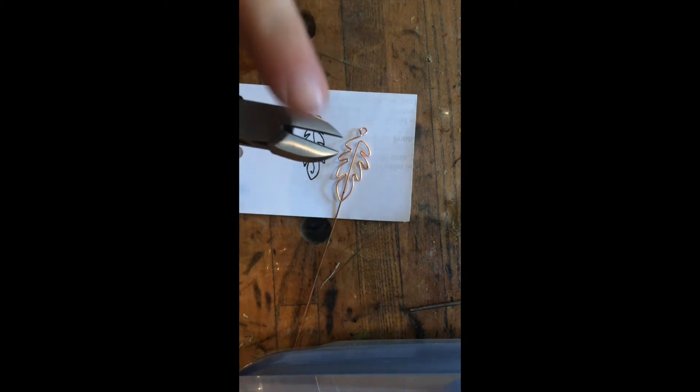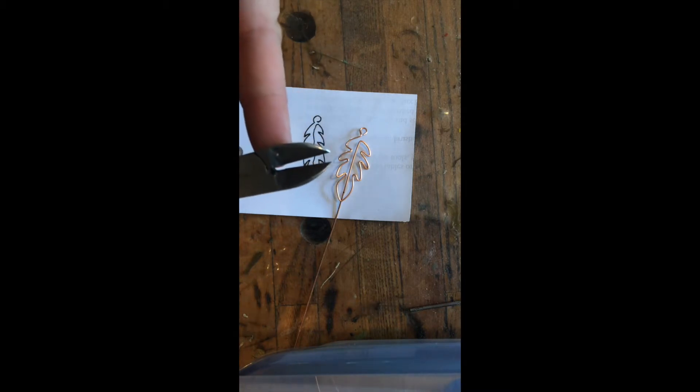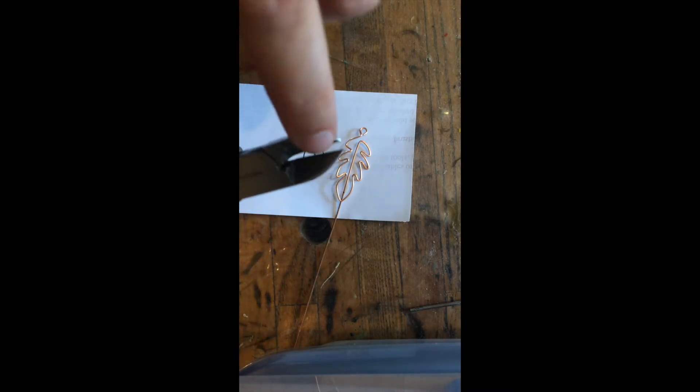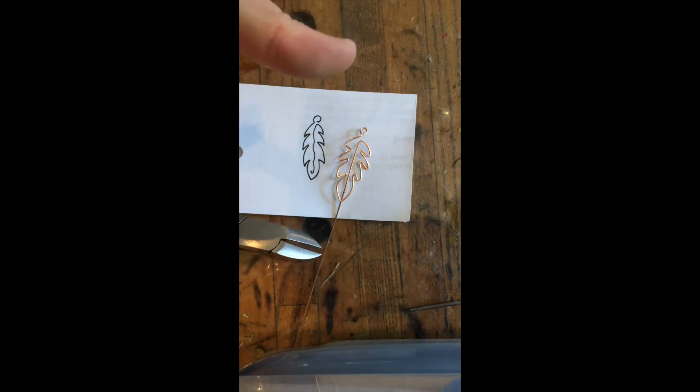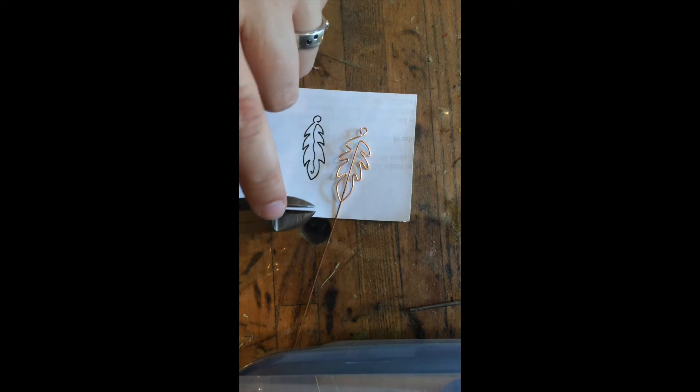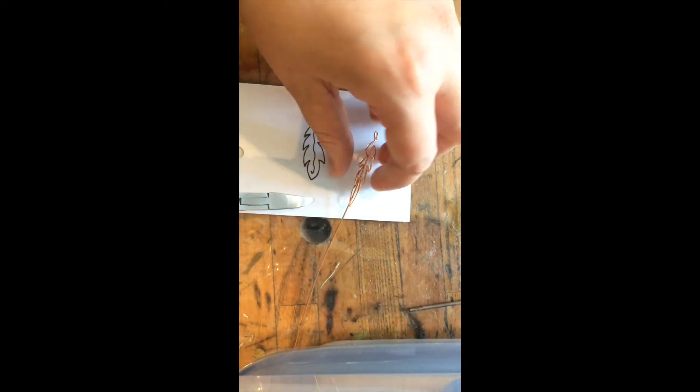I'm going to take the wire cutters. There's two sides: the side that has that little dip in it and the side that's flat. The part that's going to stay on your piece, you want the flat side facing toward your jewelry piece. The dip part should face toward the piece you're going to cut away from it.